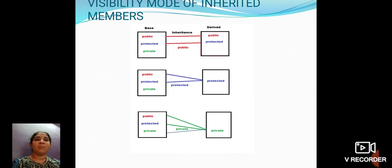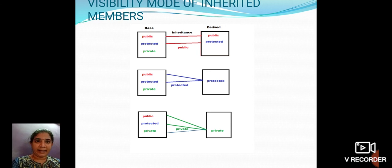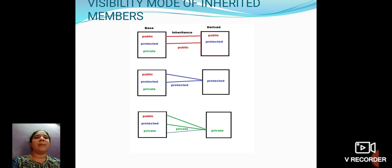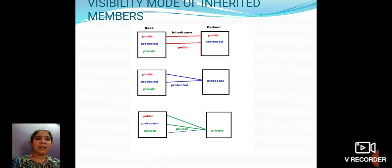Visibility mode of inherited members: Under public inheritance, the public data members of the base class will be inherited as public data members in the derived class. Again, protected data members will be inherited as protected data members in the derived class.